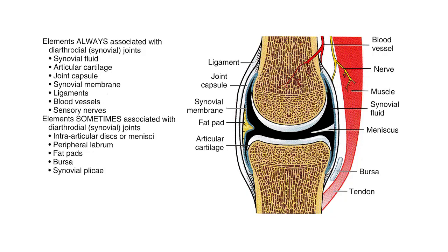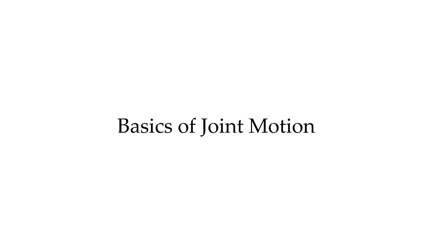These are all parts of every synovial joint. Other structures you may find in the joint include fibrocartilage, fat pads, and bursa. Before we take a closer look at synovial joints, it would be helpful to think about a few basics of joint motion.